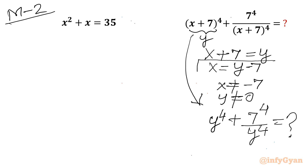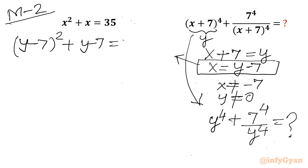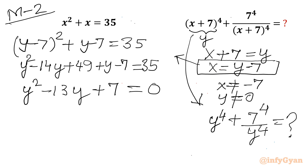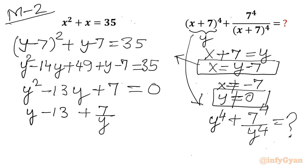Applying x = y - 7 to our quadratic equation: (y-7)² + (y-7) = 35. Expanding using (a-b)²: y² - 14y + 49 + y - 7 = 35. Rearranging gives y² - 13y + 42 = 0. Since y ≠ 0, we divide by y to get y - 13 + 7/y = 0.